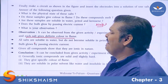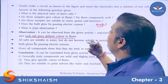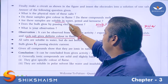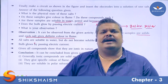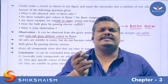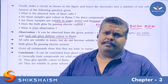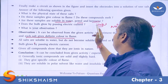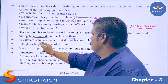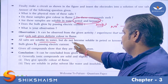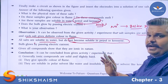Do these compounds melt? Yes, these compounds melt — solid substances have a definite melting point. Are these samples soluble in water, petrol, and kerosene? Most ionic compounds can be dissolved in water. Water is a polar solvent, and ionic compounds dissolve easily in polar solvents. However, they are insoluble in petrol and kerosene, which are non-polar solvents.